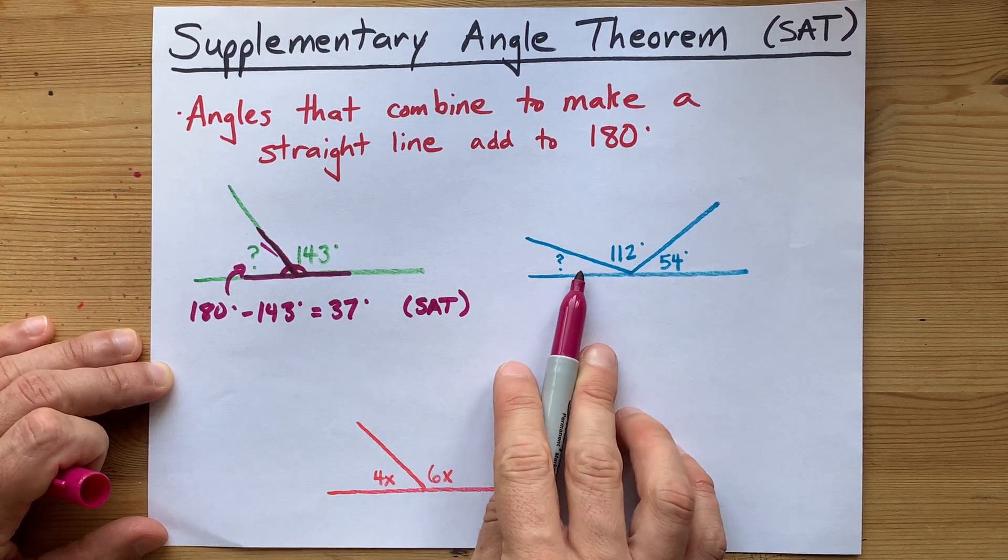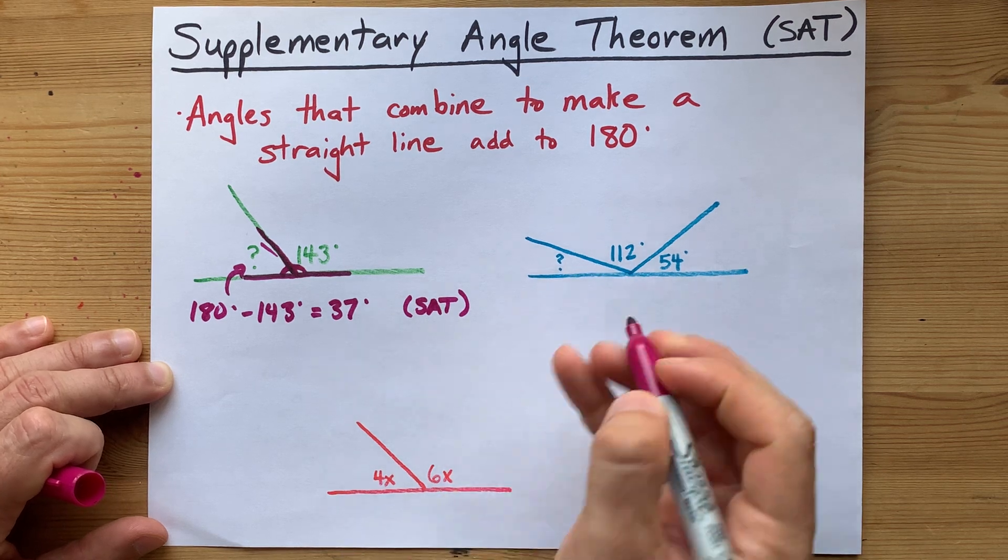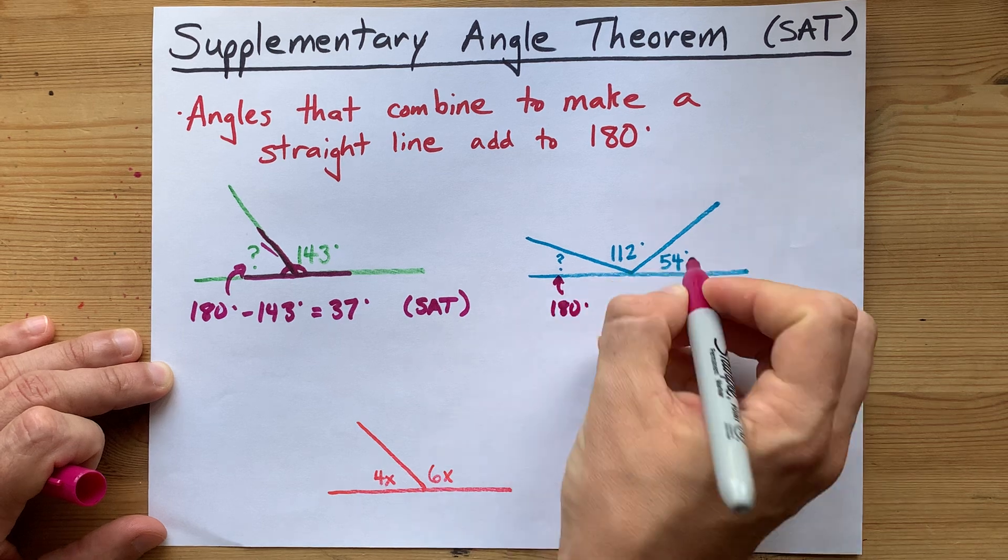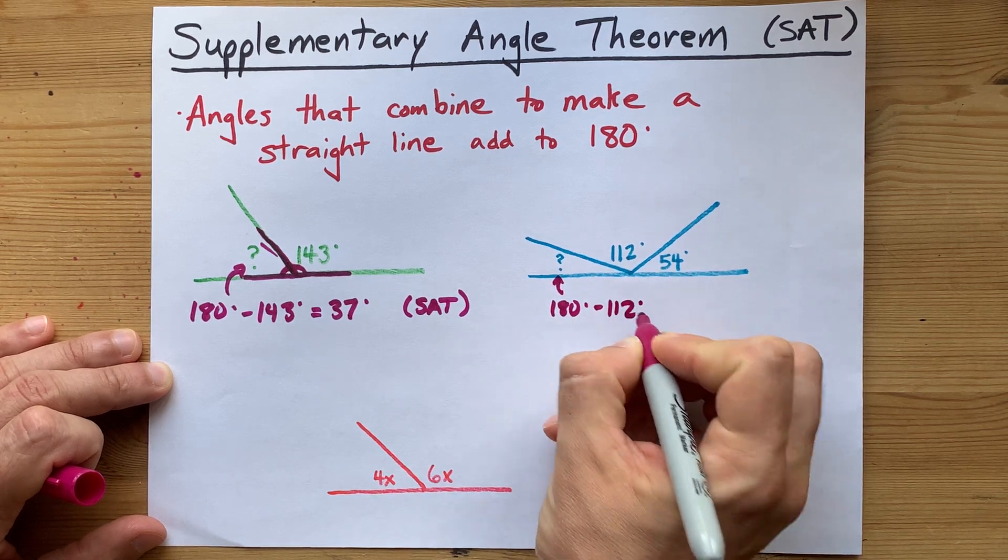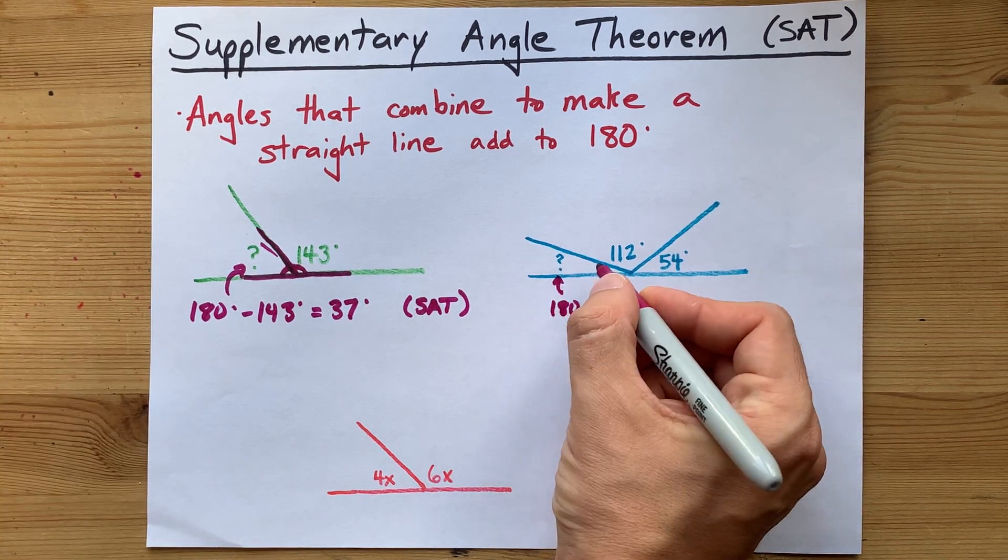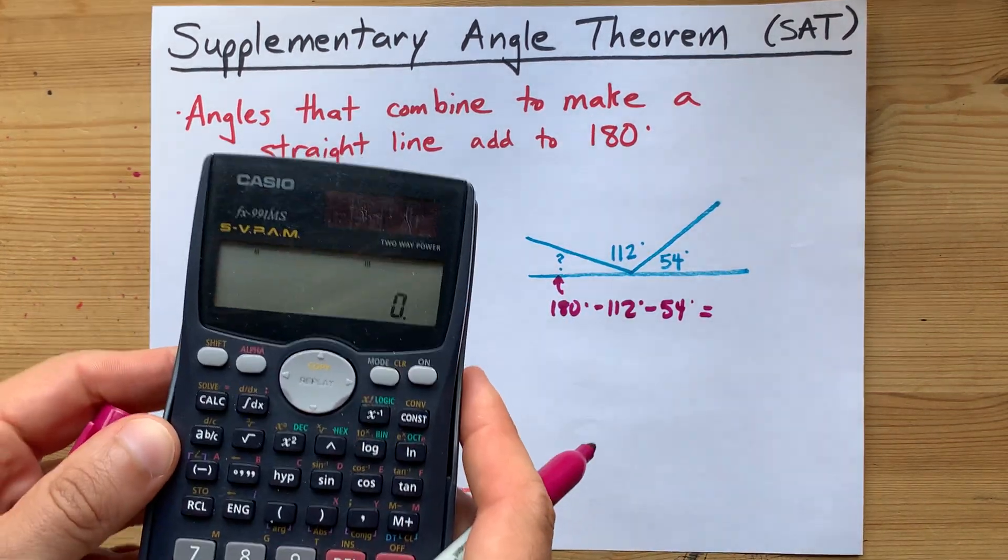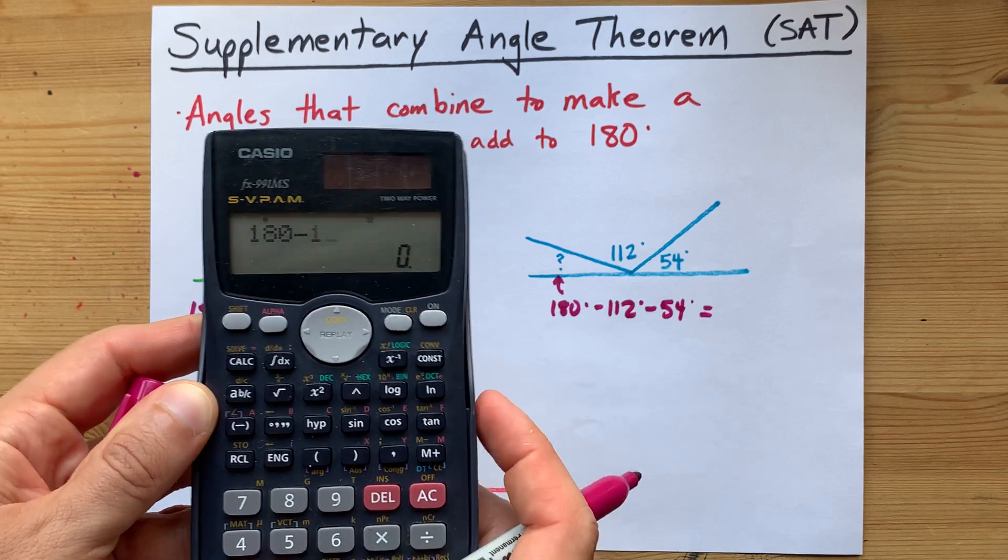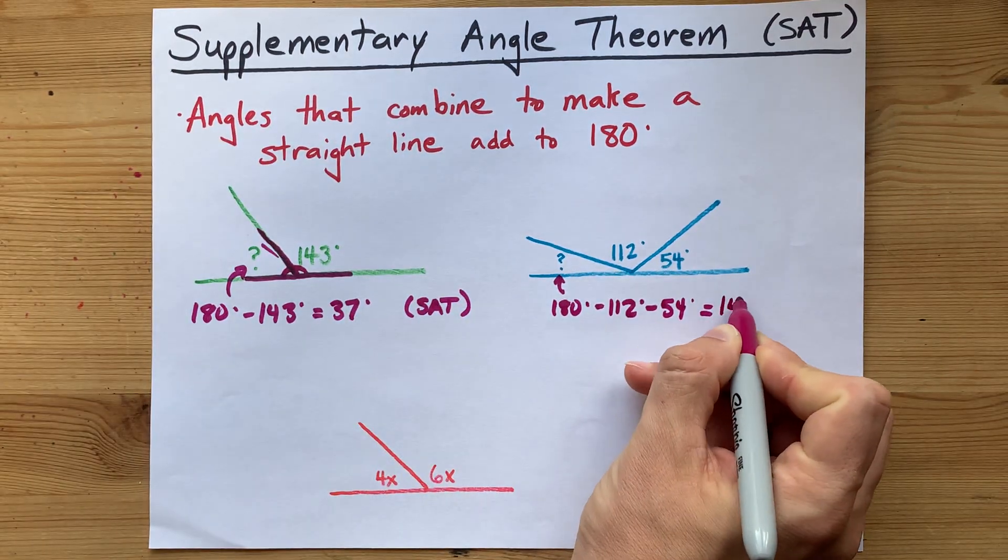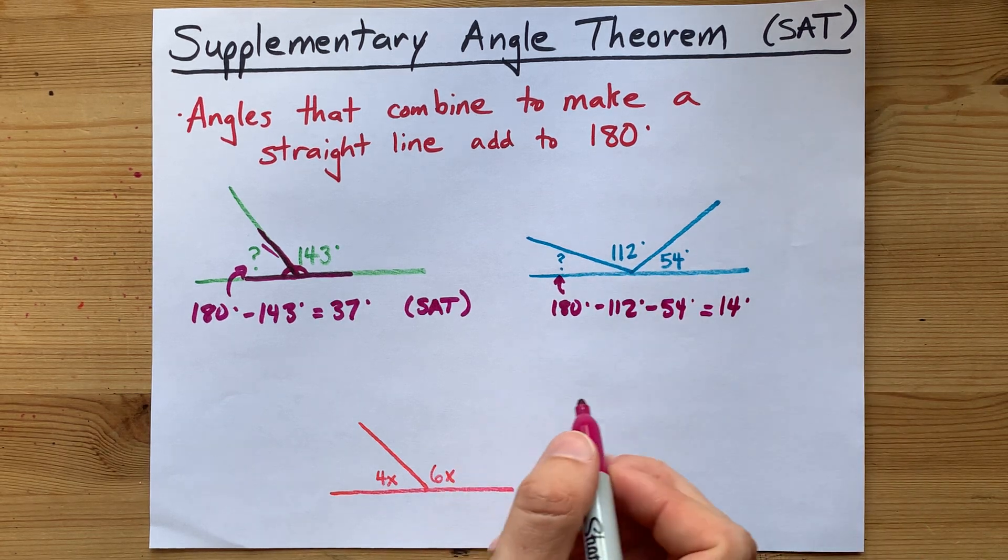That works just as well for three angles. You can say that this question mark is 180, you take away the 112, and you take away the 54. What's left over is the size of that third unknown angle.